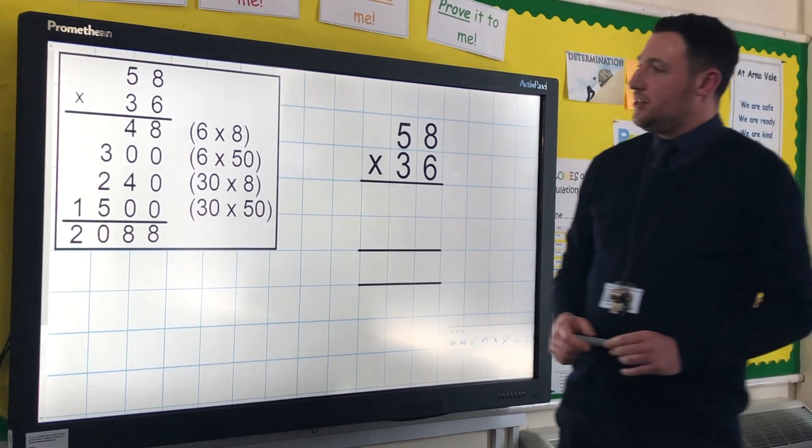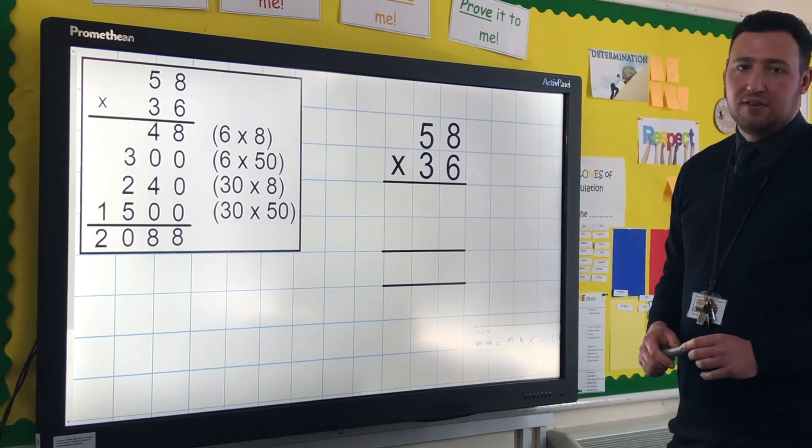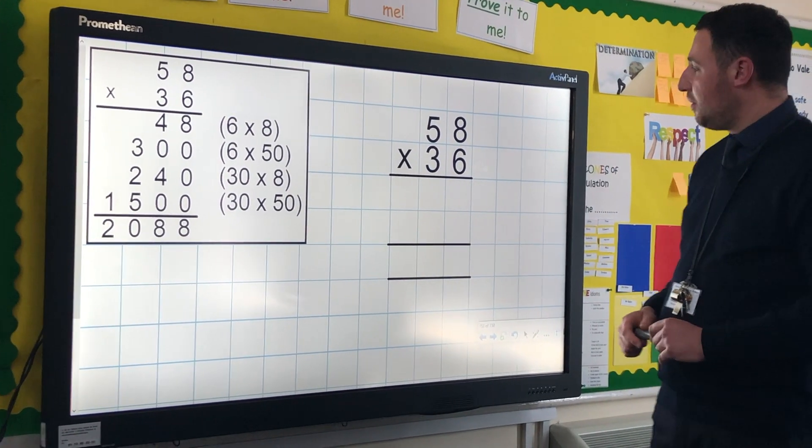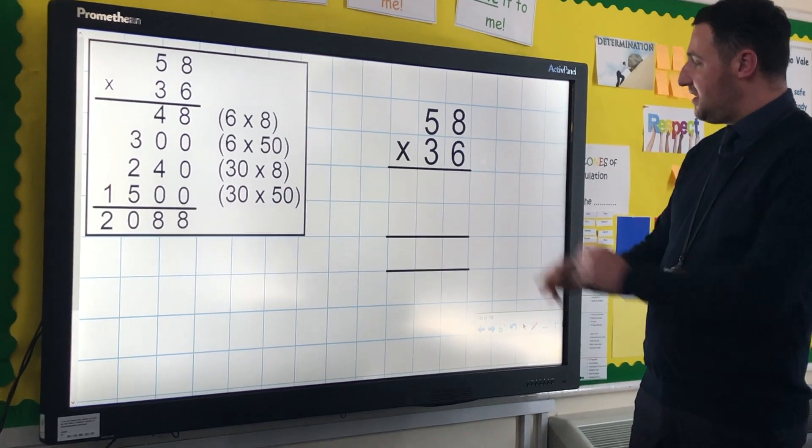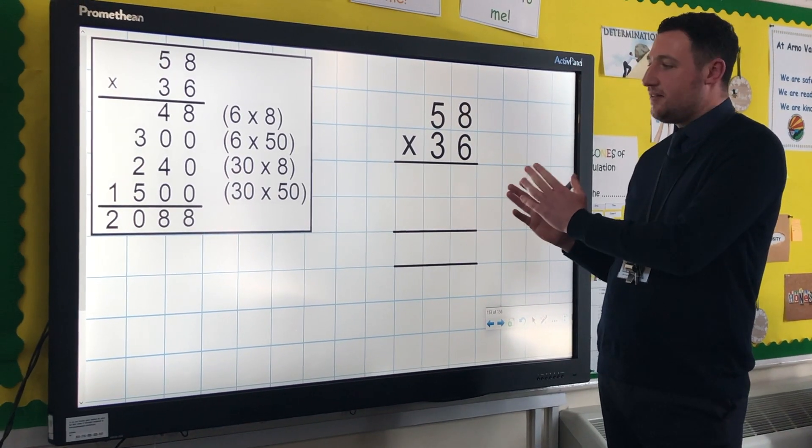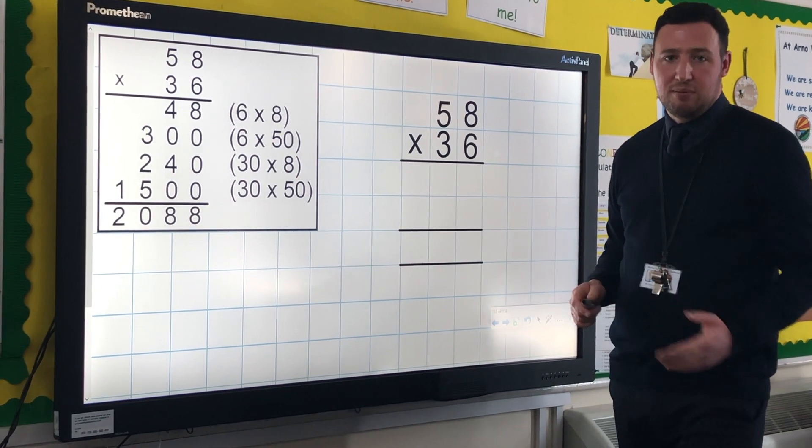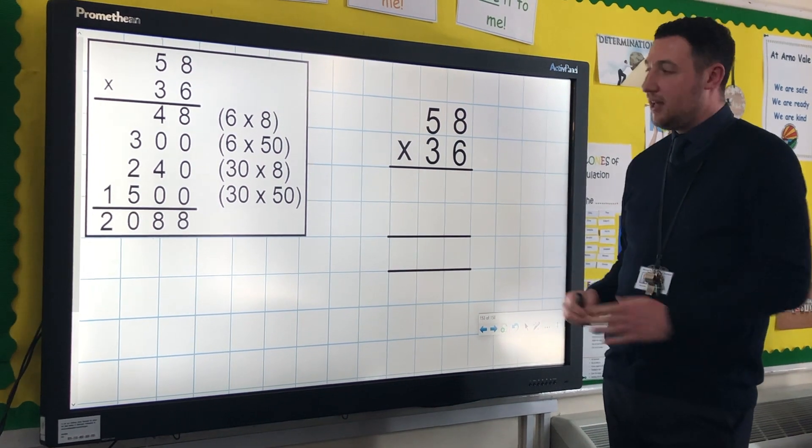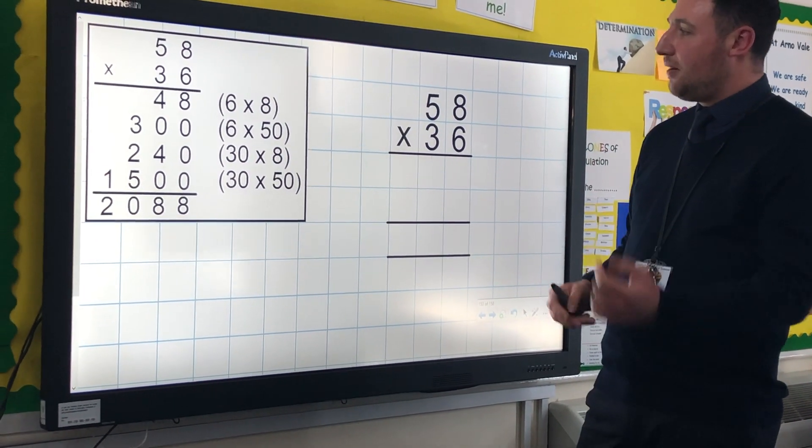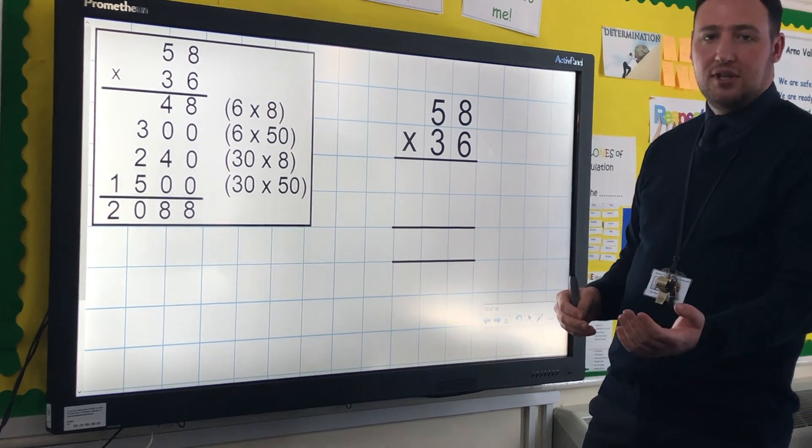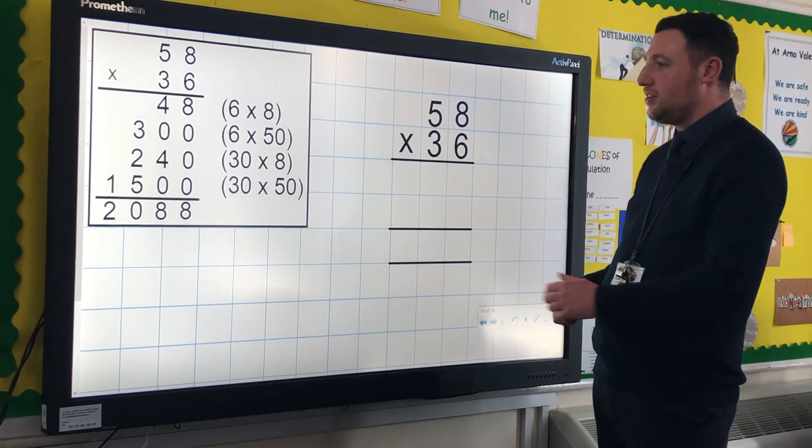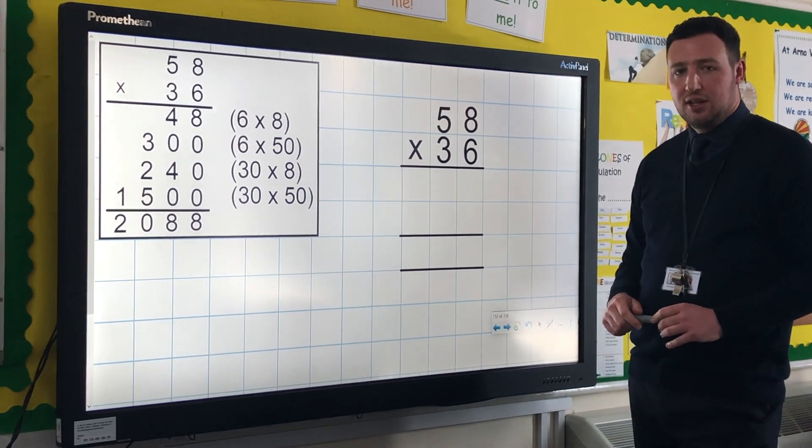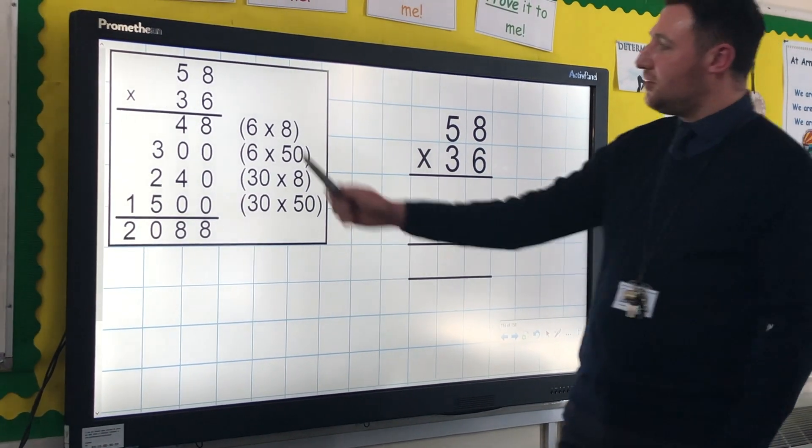So the final video in our multiplication series is looking at the compact method for long multiplication. This is the method that as adults we will remember from school ourselves, and this is what we're aiming for children to be able to do by the end of year six. But as we'll have seen from these videos, that's a four-year process. We're not going to go straight in with this at year three. We've broken the method down and we started with the grid method, then looked at expanded methods for short multiplication, expanded methods for long multiplication, and ultimately we'll be teaching the children the compact method for long multiplication.